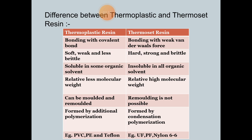Thermoplastics are soft, weak, and less brittle resins, whereas thermosets are hard, strong, and brittle compared to thermoplastics. Thermoplastic resins are soluble in some organic solvents, but thermosets are insoluble in all organic solvents. Thermoplastics have relatively lower molecular weight, while thermosets have relatively higher molecular weight. Thermoplastics can be molded and remolded, but in thermosets remolding is not possible.